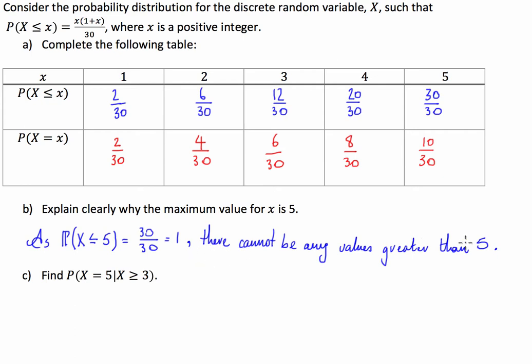Find the probability that x is equal to 5 given that x is greater than or equal to 3. First of all, the probability that x is equal to 5 is going to be this number here. So this is going to be equal to the probability that x is equal to 5 divided by the probability that x is greater than or equal to 3.